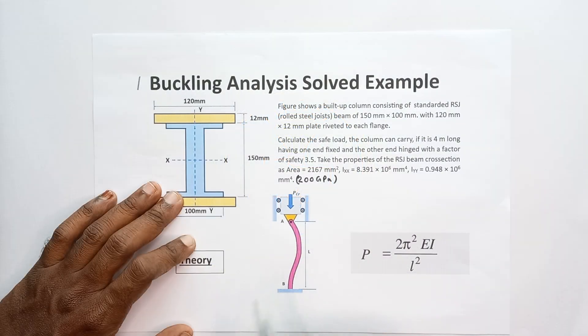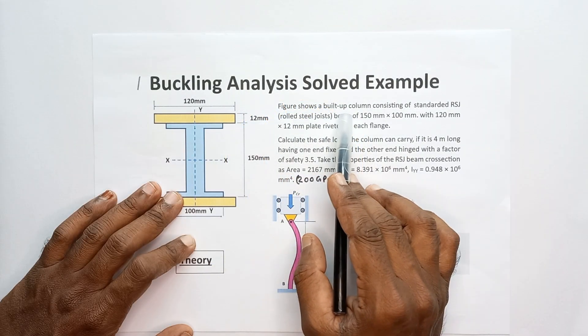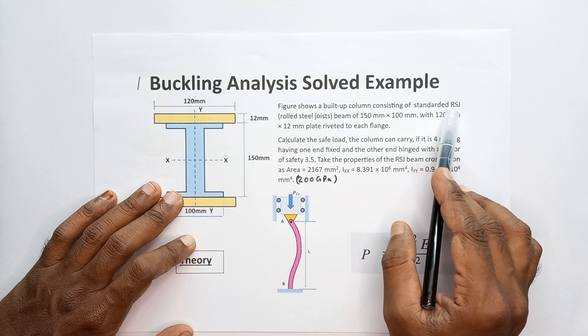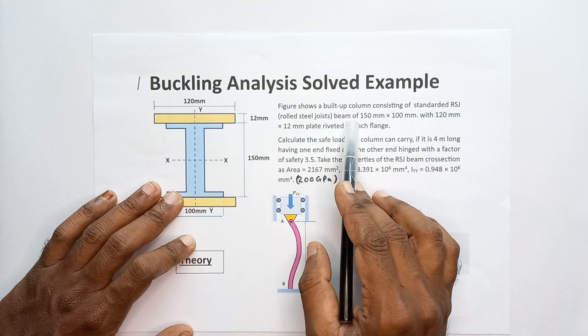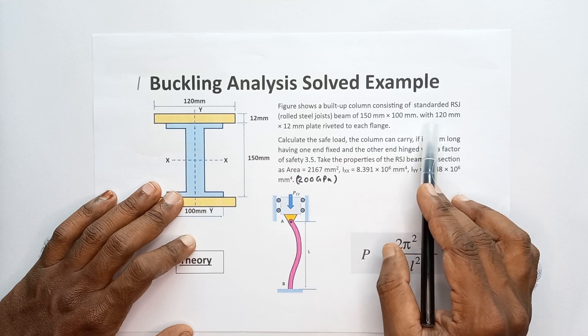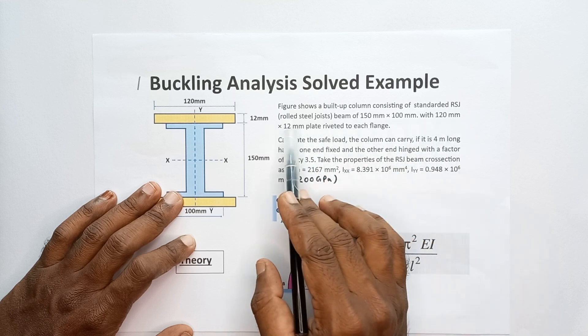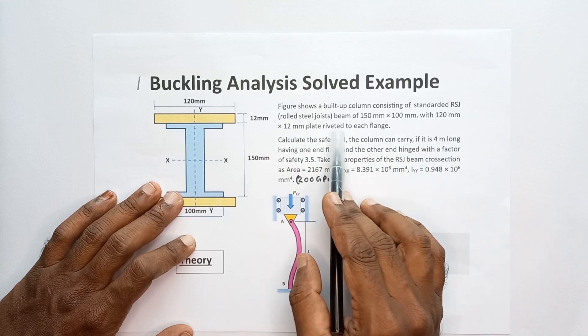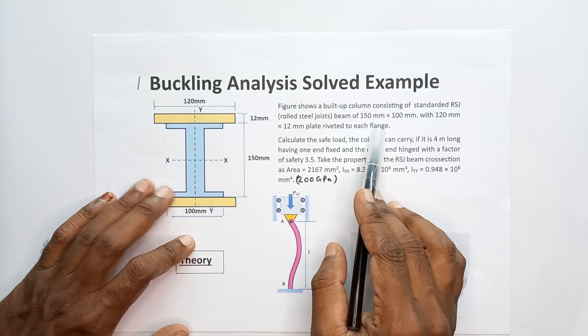Okay, this is the problem we are going to discuss in this video. The figure shows a built-up column consisting of a standard RSA beam of 150 millimeter by 100 millimeter with 120 millimeter by 12 millimeter plate riveted to each flange.